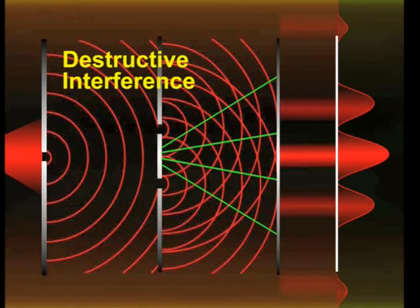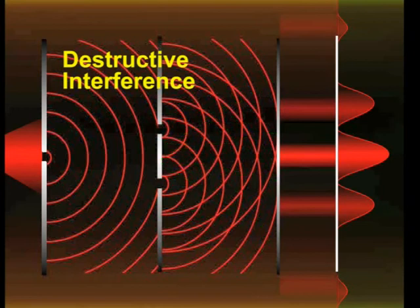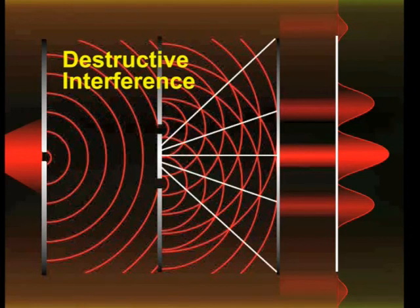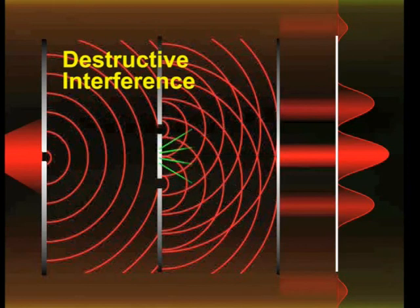Therefore, destructive interference occurs where the crest of one wave falls on the trough of the other wave. In general, bright bands occur where the light waves interfere constructively, and dark bands occur where the waves interfere destructively.